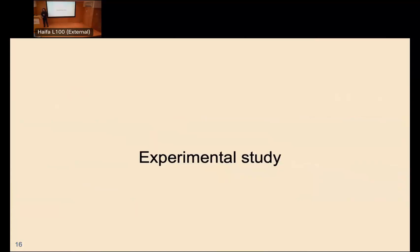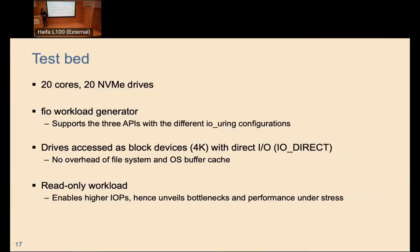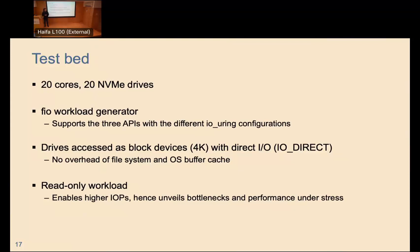Now let's look at the experimental study, starting with the testbed. We use a machine with 20 cores and 20 enterprise-grade NVMe drives. To compare the three APIs, we use the FIO workload generator — the only benchmarking tool that supports LibAIO, SPDK, and io_uring with all its variants. We use the drives as block devices with no file systems, use direct IO to avoid OS cache effects, and run a random read-only workload with 4K block size to study API behavior at peak throughput.